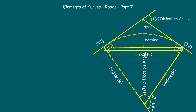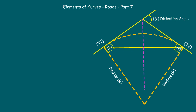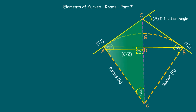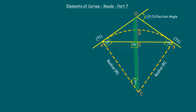For easy calculation, we draw an imaginary straight line connecting the point of intersection, the midpoint of the curve, and the center of the circle (origin of radius). This imaginary line bisects the chord perpendicularly. It forms a right-angle triangle. The angle between the start of the radius and this imaginary line is θ/2, and the distance from the midpoint to the tangent point is half the chord, which is C/2.